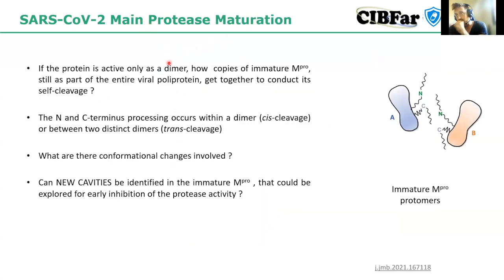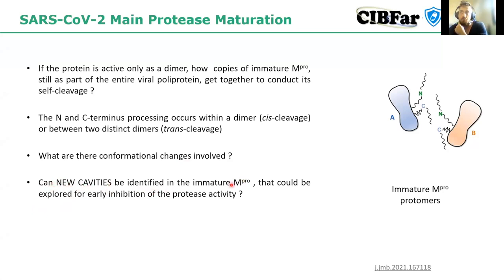The questions of maturation we were trying to ask in this project were: if the protein is only active as a dimer, how can the immature form — that form not yet cleaved, still part of the polyprotein — become active and cleave itself? Does the N-terminal and C-terminal processing occur within the dimer structure, meaning a cis-cleavage event, or does it happen between two distinct dimers, meaning a trans-cleavage event? And what conformational structural changes are involved?